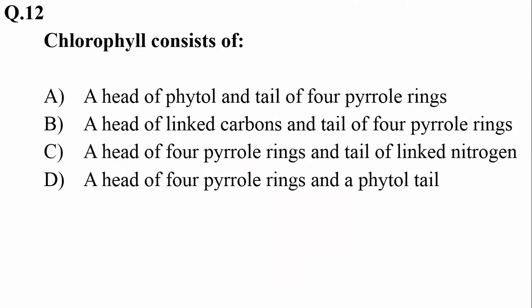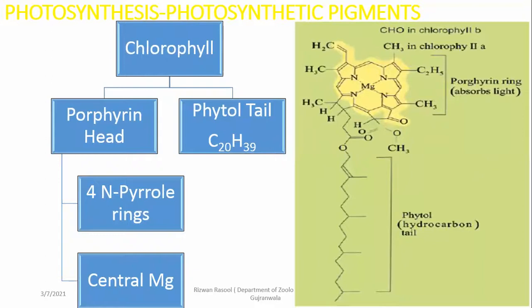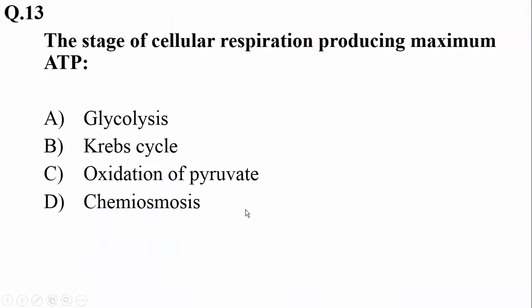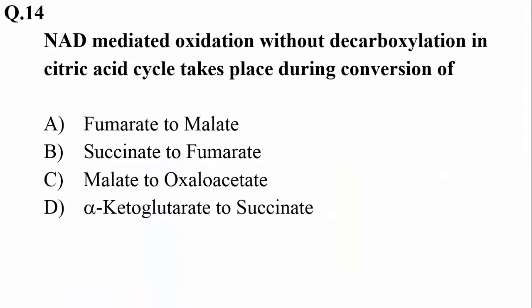Chlorophyll consists of a head of four pyrrole rings — also known as a porphyrin head — and a phytol tail. That is the structure of the chlorophyll molecule. The stage of cellular respiration producing maximum ATP is the electron transport chain, or chemiosmosis during the respiratory chain. So the right option is D.